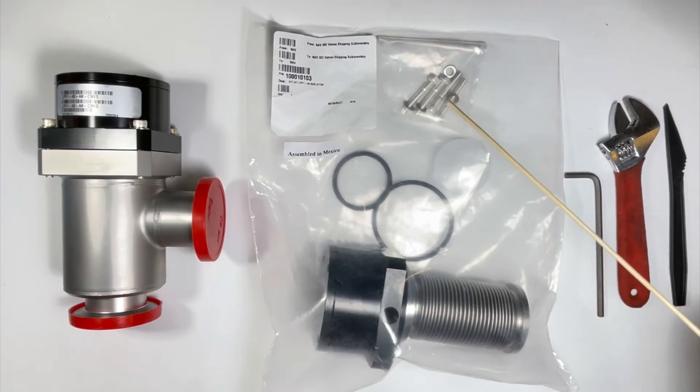You will need a 5/32 inch Allen wrench for removal of the bolts on the valve, a wrench for removal of the solenoid or pneumatic airline connection, and gloves to protect your hands and prevent any oils or contaminants from getting into or onto the valve.